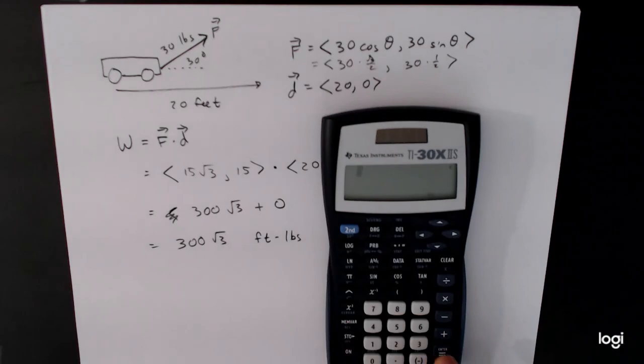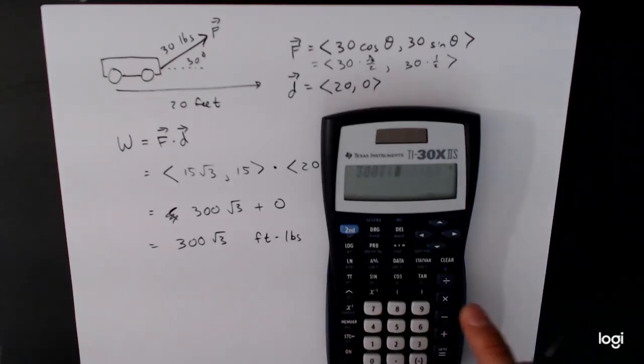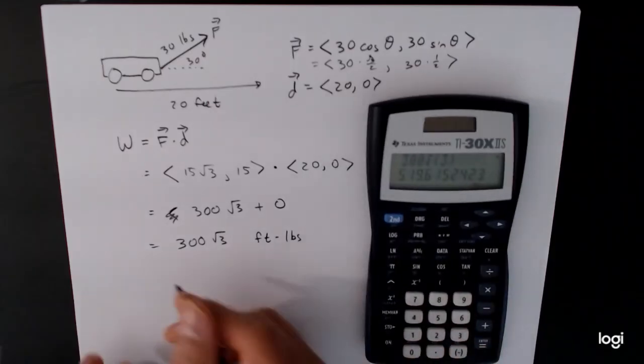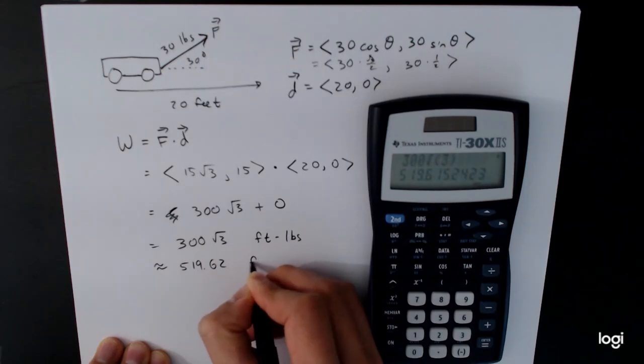If you wanted to do a decimal approximation of that, you certainly can. Again, 300 times the square root of 3 is going to be approximately 519.62 foot pounds.